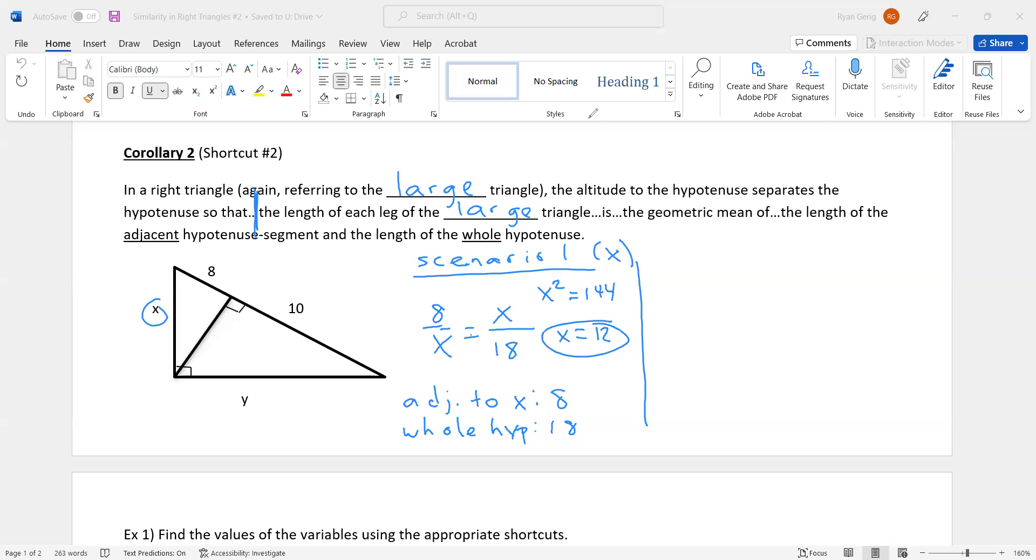Now scenario two is the other leg, which would be Y. So again, Y is a leg of the large triangle, so it's the geometric mean of what? Adjacent segment, adjacent hypotenuse segment. Well what's adjacent to Y? In this case it's 10. And the whole hypotenuse, that doesn't change, it's still 18. So 10 and 18. So I get Y squared equals 180. Square root, I get Y equals 6 radical 5, I believe is what that is.